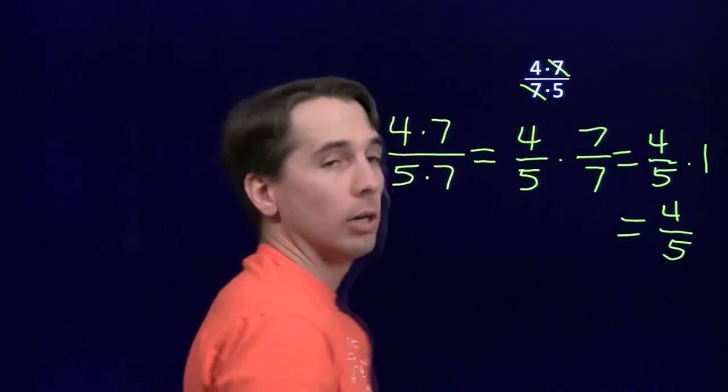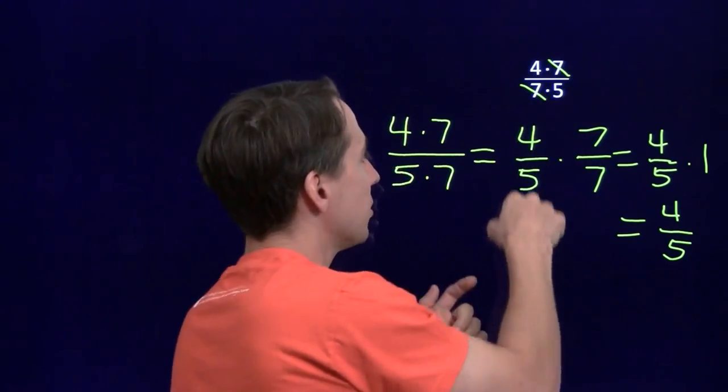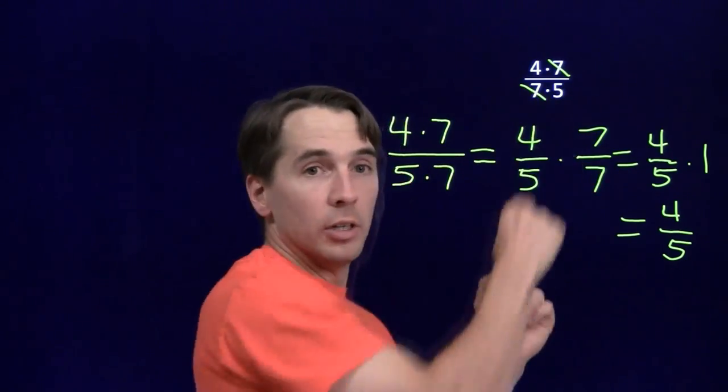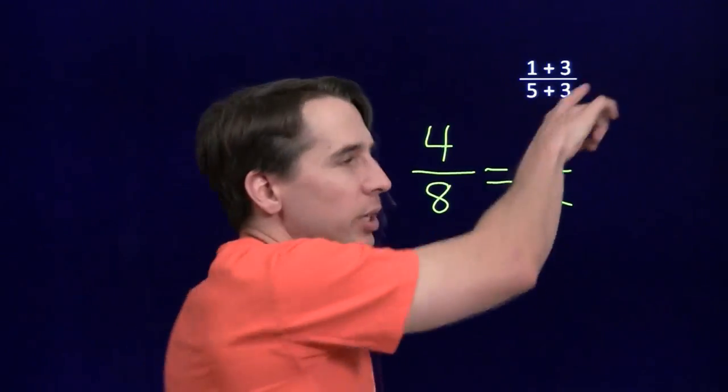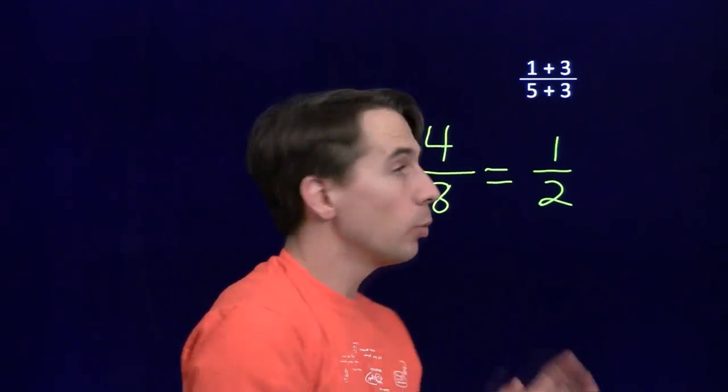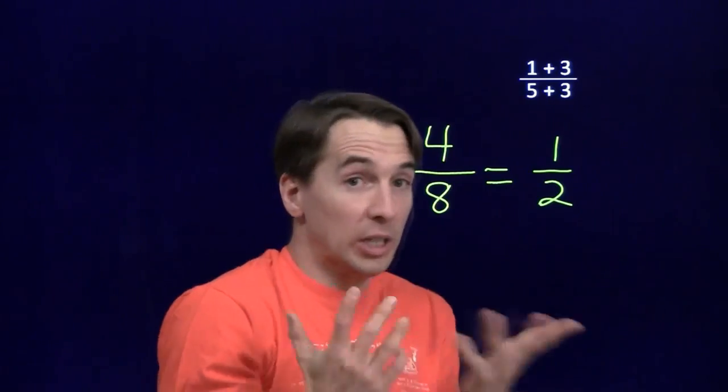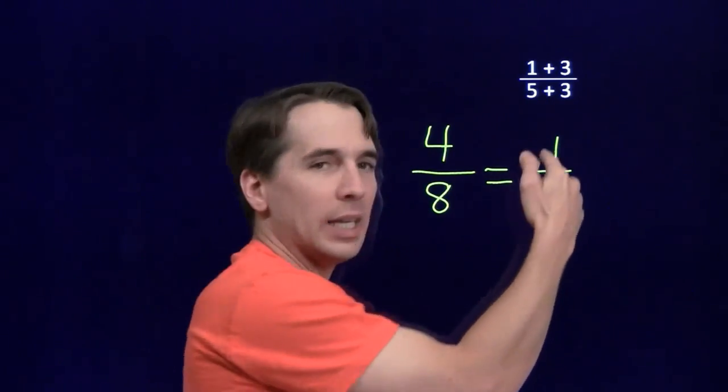We can't just move the 3s out like we've moved the 7s out here. Here, we were able to rewrite this as 4 fifths times 7 over 7, using perfectly good math rules, and that's why we could cancel here. We can't break the 3s out here. We can't do that. We don't have any math rules that allow us to do that, and we can only do what the math rules let us do. We can't cancel.